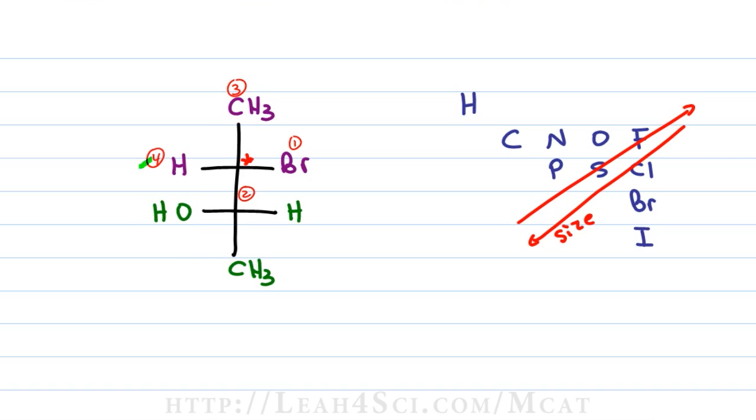Now that we have our priority, cancel out number 4, trace the path from 1 to 2 to 3, it looks like it should be R but because hydrogen is coming out of the page, remember the bowtie on Mr. Organic Chemistry, it's coming forward so you have to reverse it, look at it from the back and that gives you S.